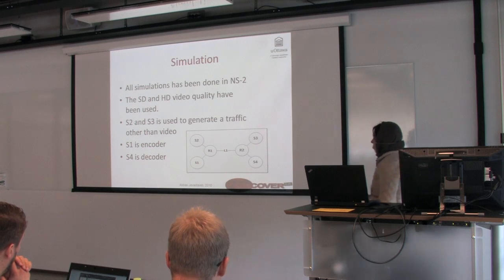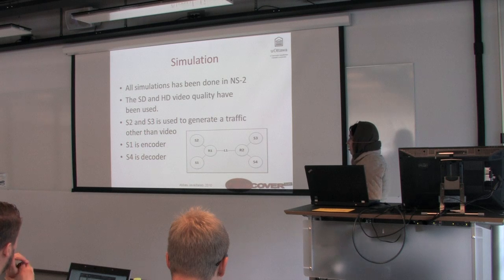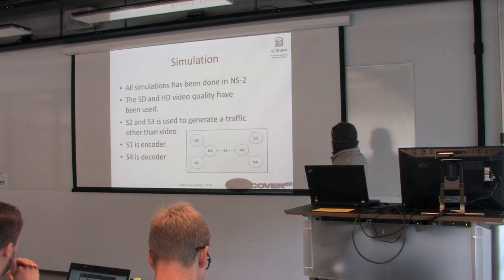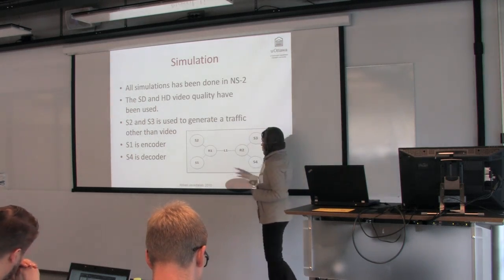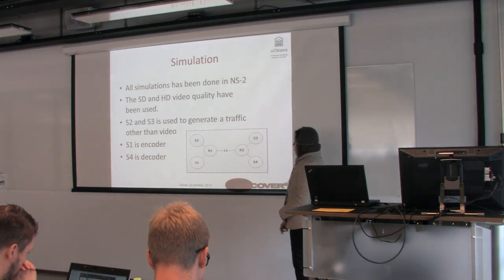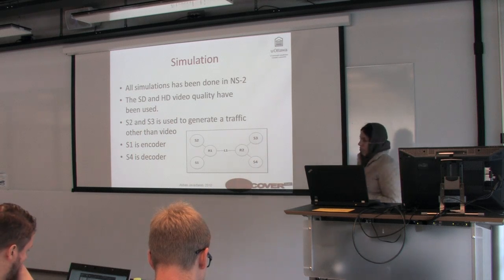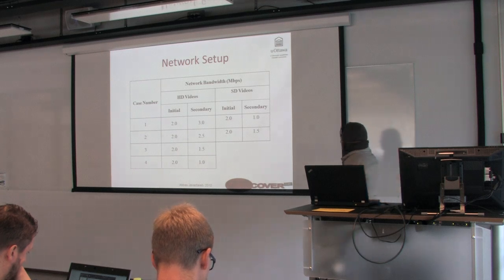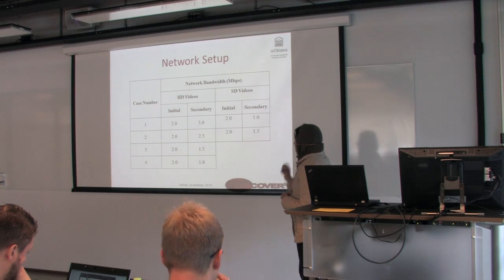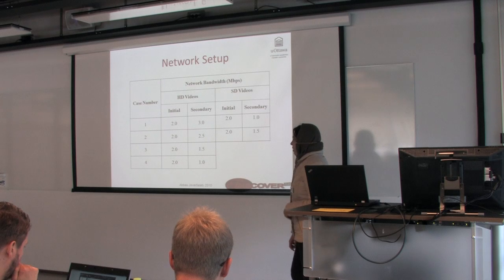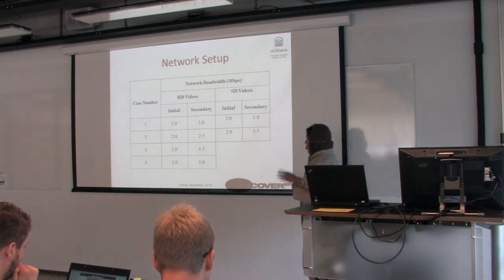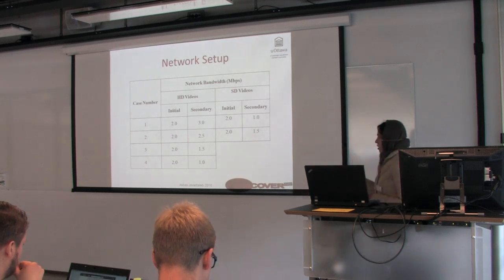To evaluate the proposed method, they set up a simulation using NS2, using both standard definition and high definition videos. In the simulation setup, S1 is the encoder and S4 is the decoder. S2 and S3 are used to generate additional traffic beyond the video stream. The encoder bitrate is fixed at an initial value, and at second two of the video, or frame 60, it changes to a secondary value, for both HD and SD sequences.